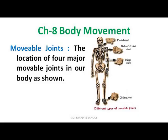Now we will talk about movable joints — the joints where movement is possible. The four major movable joints in our body are: the pivotal joint, the ball and socket joint, the hinge joint, and the gliding joint. These are the joints where motion is possible.